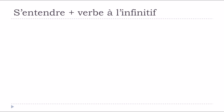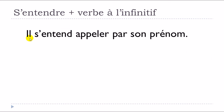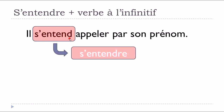Let's start with this structure: il s'entend appeler par son prénom. Let's take the time to have a look at this. The first part is s'entendre — that is the infinitive form. If you would like to translate it directly, it means 'to hear oneself' or 'to listen to oneself', but directly translating the sentence with this concept of 'oneself' is quite strange.